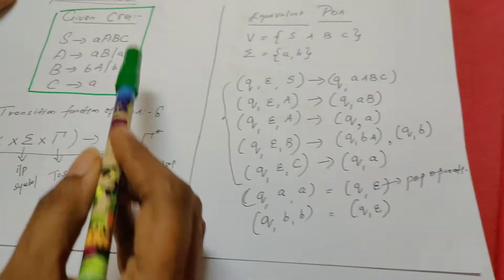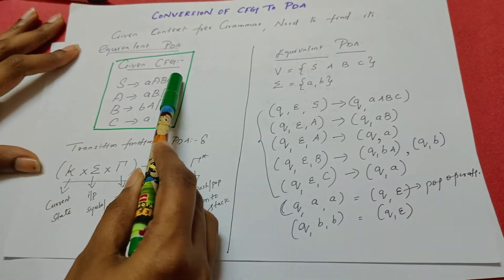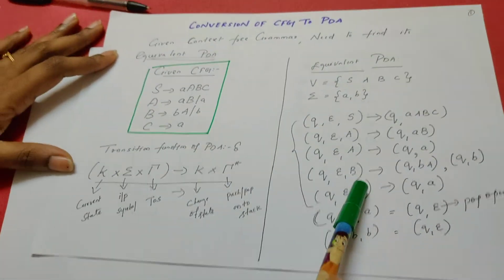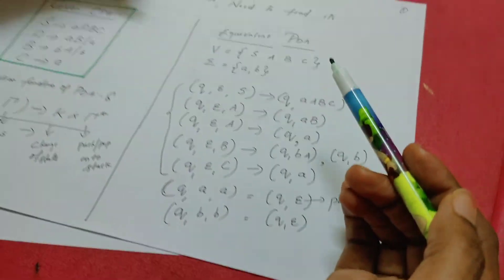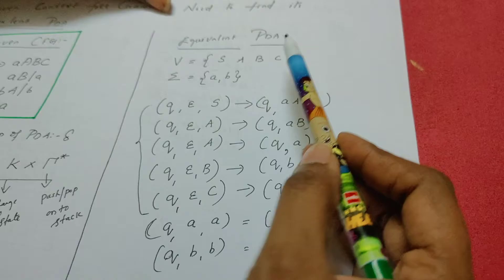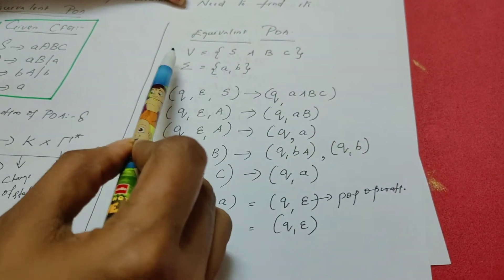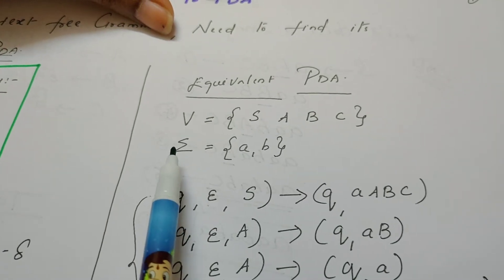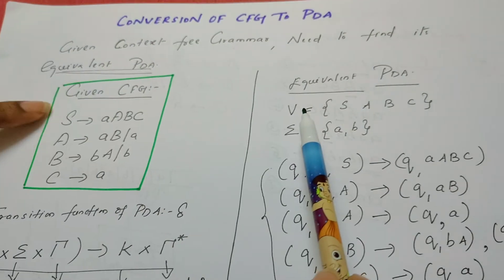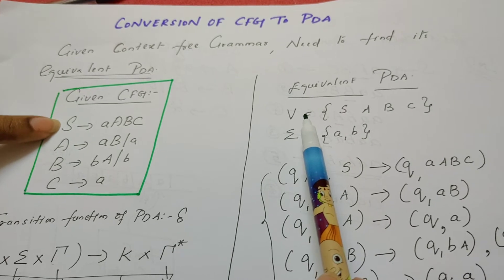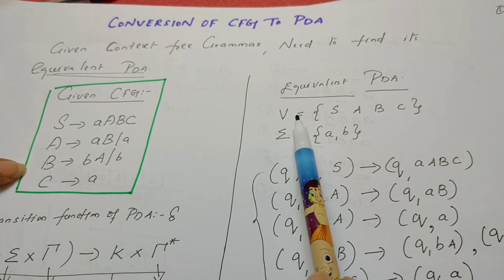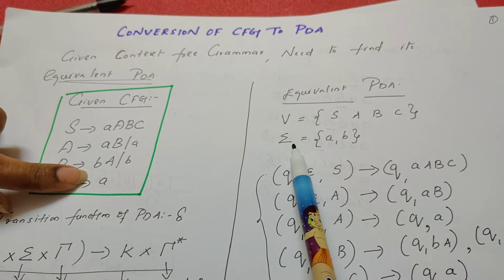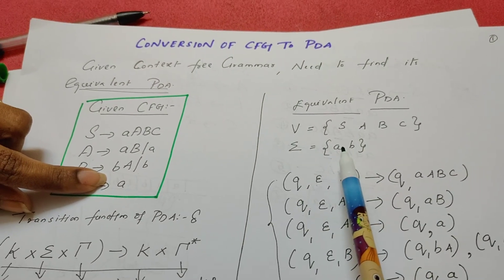Our objective is to find, for every production rule, the equivalent transition rule. We will blindly follow the procedure to find the equivalent pushdown automata. Before finding it, let us separately write what the variable set and the terminal set are. From the given grammar, capital letters are the variables, and small letters are the set of terminals. So we have separated them.